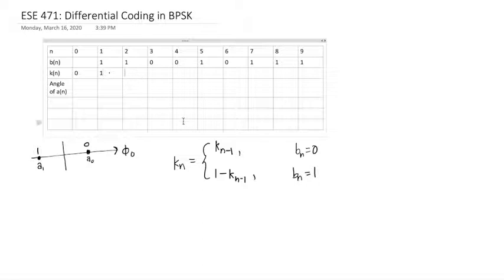At time two, I also want to send a one. Again, I look at the second row here, and that says take the opposite of what I sent the last time. So previously I sent a one, so now I'm going to send a zero.